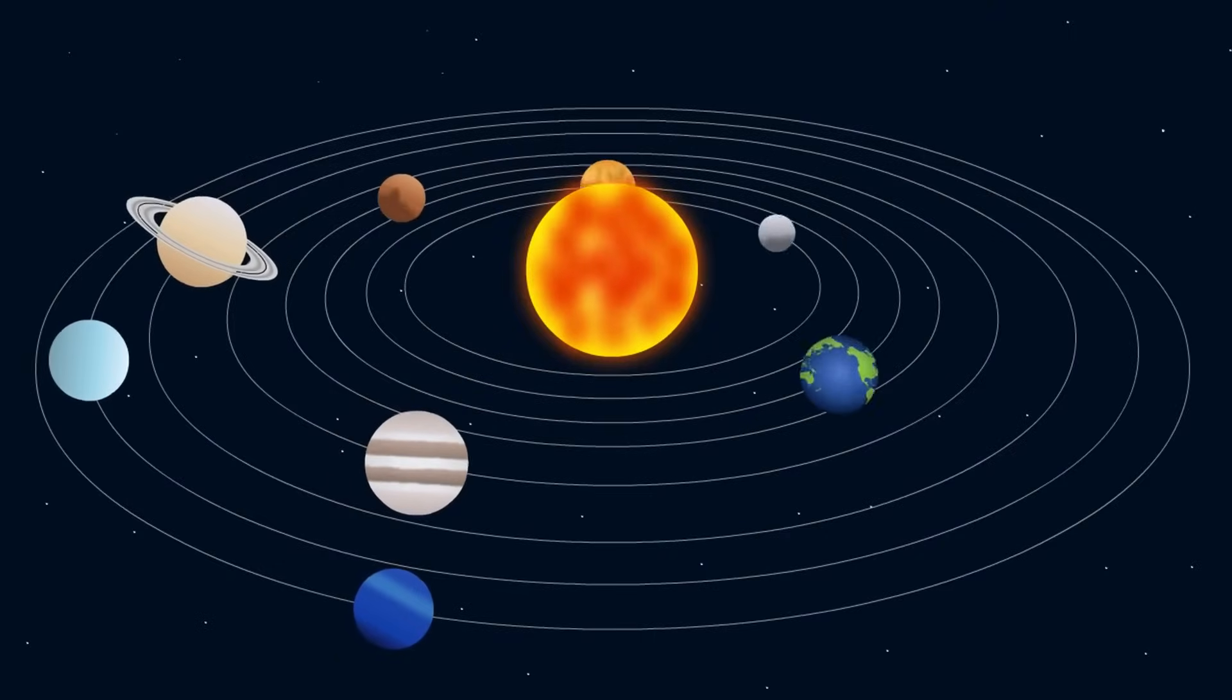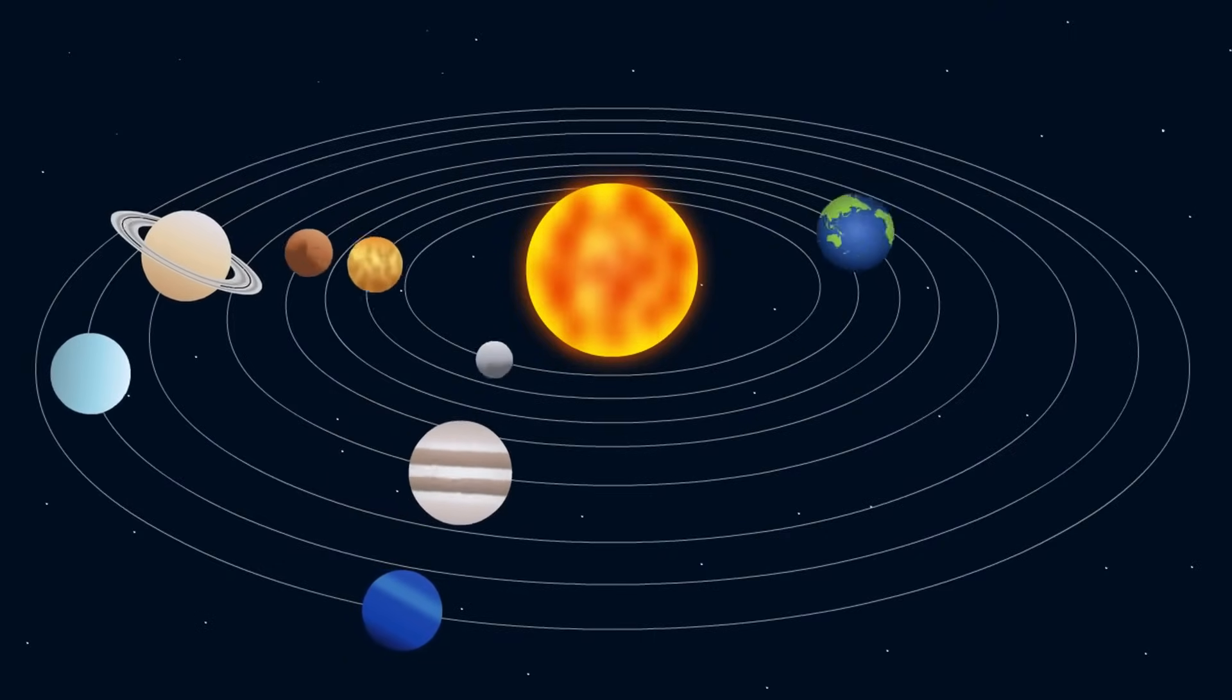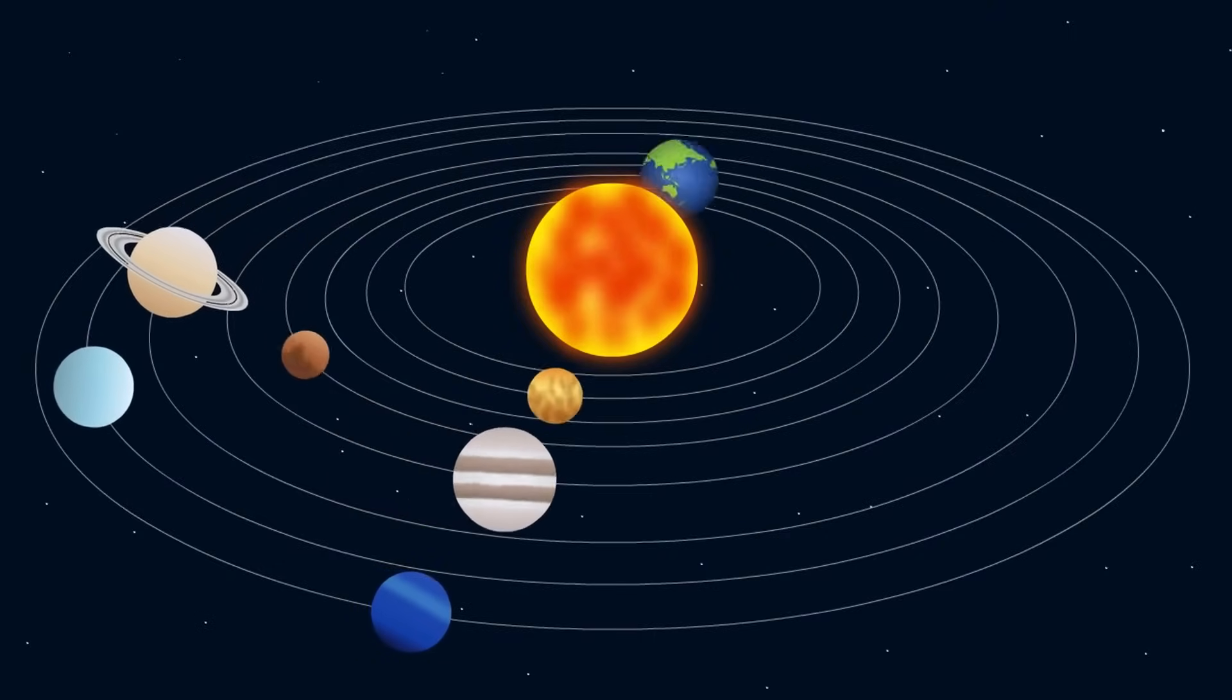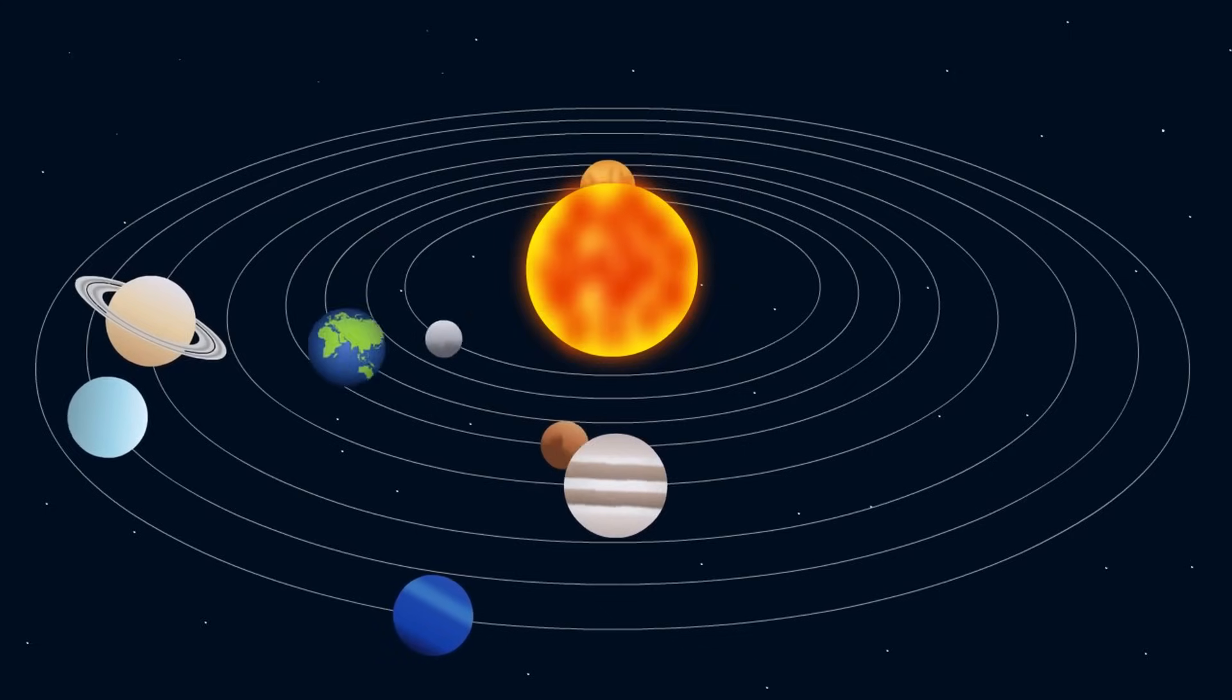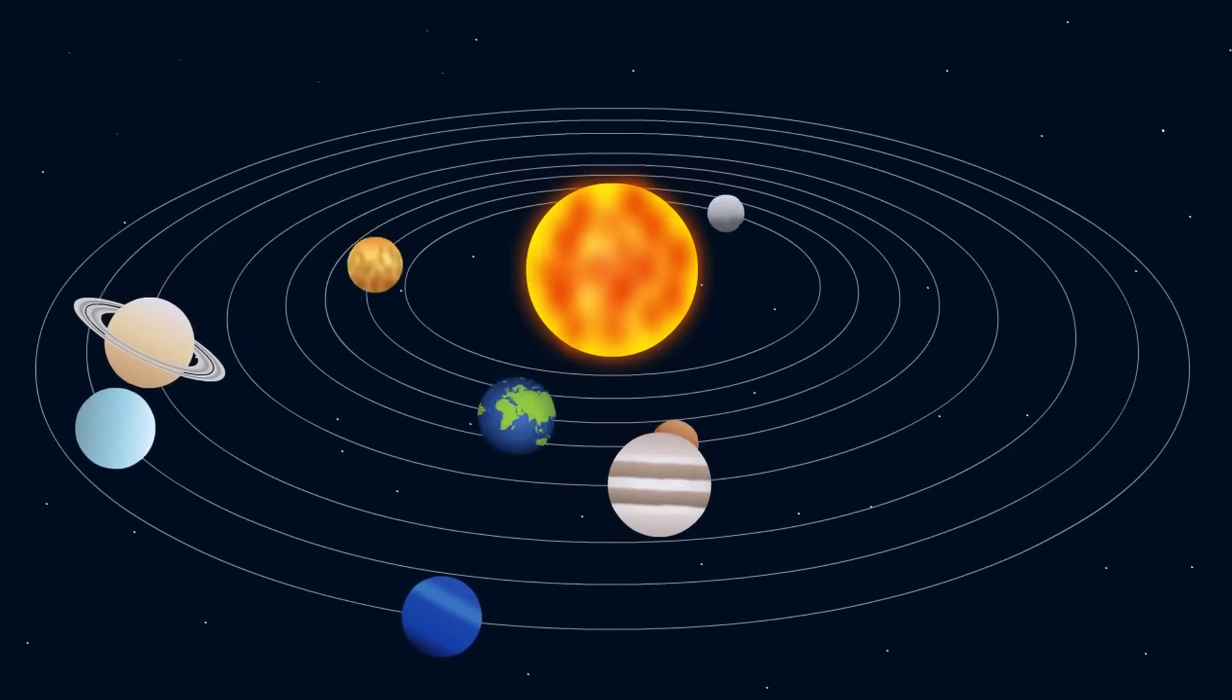Planets' temperatures depend heavily on their distance from the sun. Here's a quick look. Mercury, 58 million kilometers away. Average surface temperature 167 degrees Celsius, 440 Kelvin.